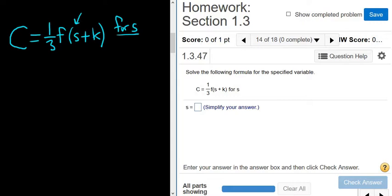I'm first going to get rid of the one-third F, and we can start maybe by clearing the fraction. So you can start by multiplying by 3. So 3, 3. So these cancel. So we get 3C equals lowercase f, and then we have s plus k.